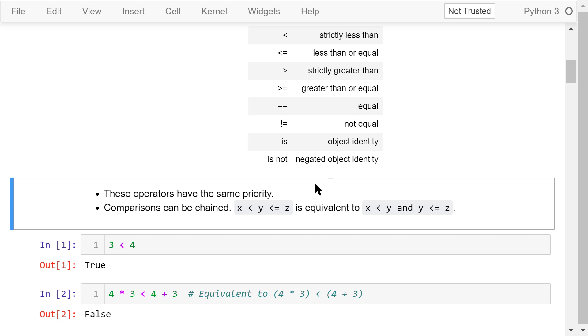These comparison operators can be applied to data types like numbers and strings. They all have the same priority. Comparisons can be chained. For example, x less than y less than or equal to z is equivalent to x less than y and y less than or equal to z.